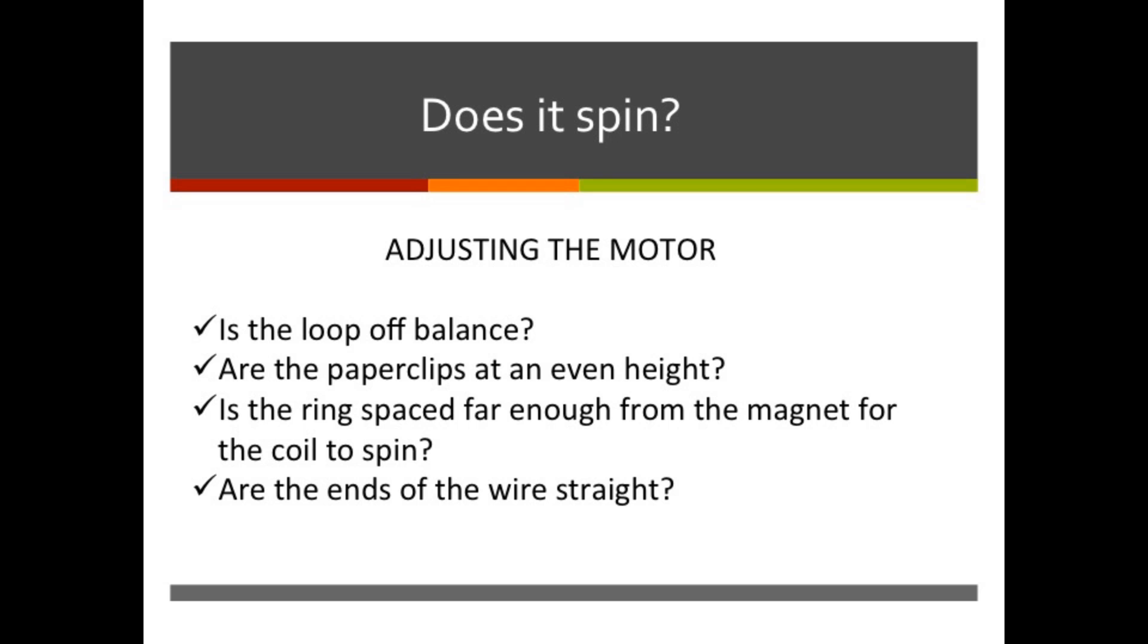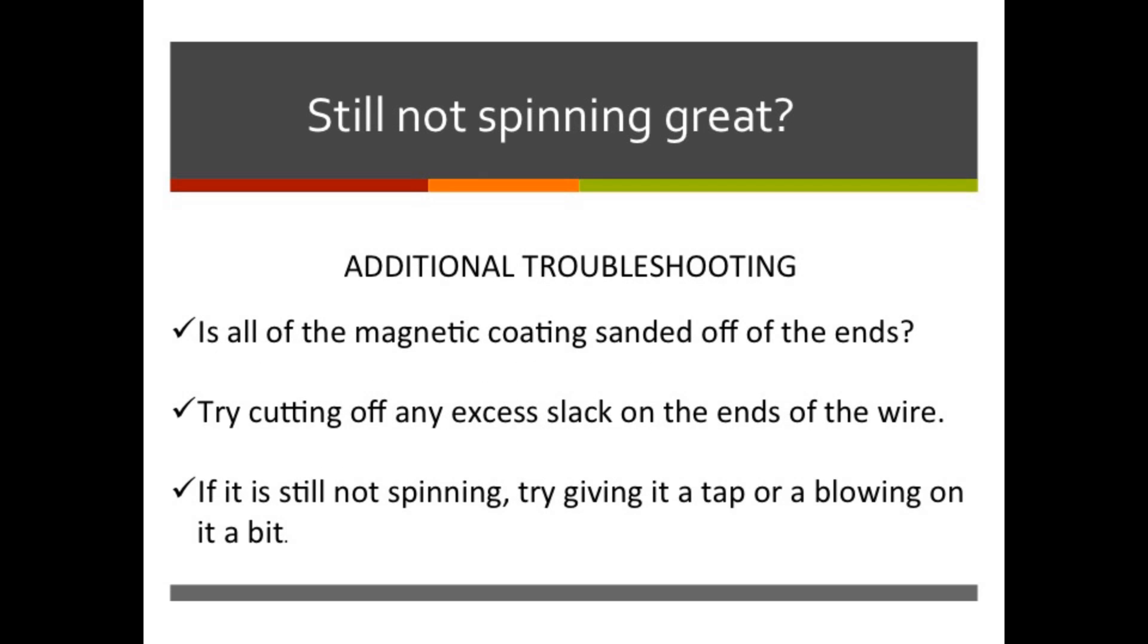Your motor may not spin immediately and that's okay. Here's some things to consider: Is the ring off balance? Are the paper clips even height? Try folding the ends of the paper clips into tighter loops. Is there enough space for the ring to spin without touching the magnet? And are the ends of the wire straight? Take a look at the coil. Is all of the magnetic coating off the ends? Try cutting off any excess slack at the end of the wire. If it's still not spinning, give it a tap or blow on it a bit.